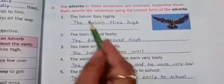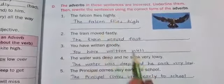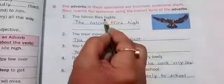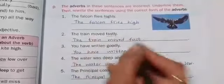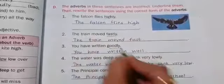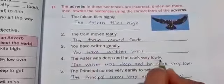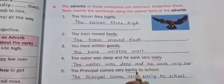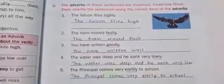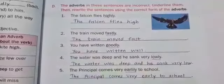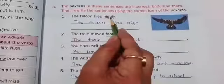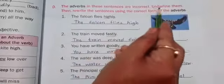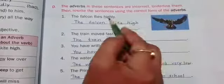In these sentences: highly, fastly, goodly, lowly, and early — these are the incorrect forms of the adverbs. So we have done the underlining here. You have to also do this in your textbook.